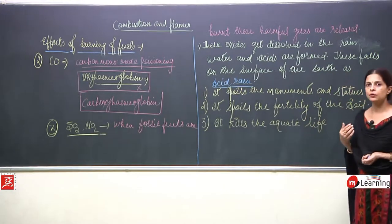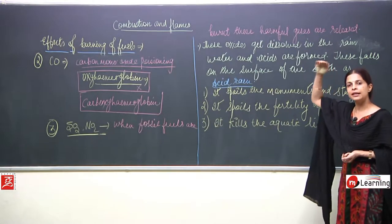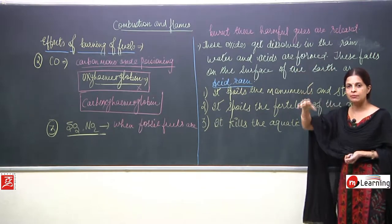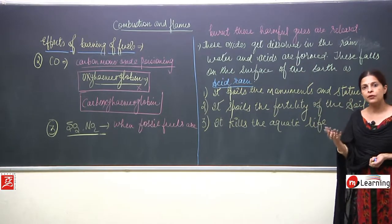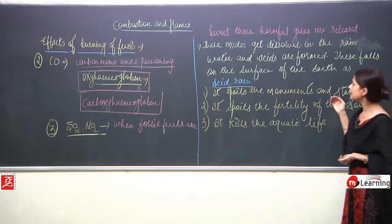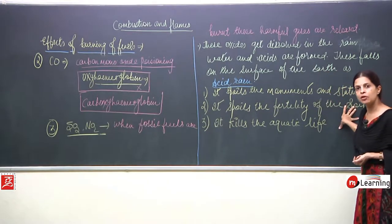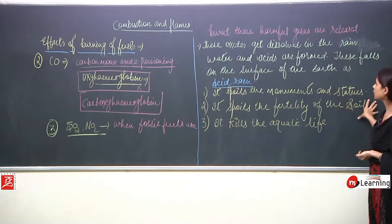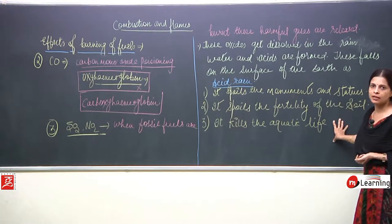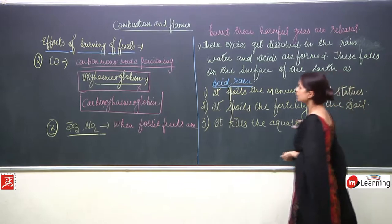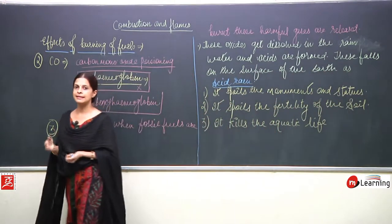When fossil fuels are burned, the oxides get dissolved into rainwater, come down on the surface of the earth as acid rain, and this acid rain spoils the fertility of soil, burns nutrients, and kills aquatic life. So this was about acid rain and the effect of those oxide gases.